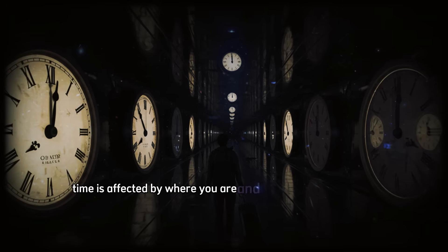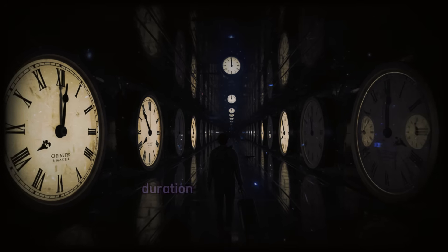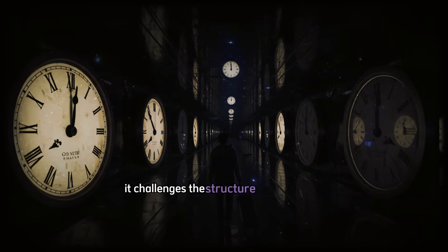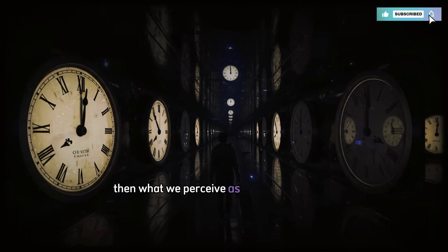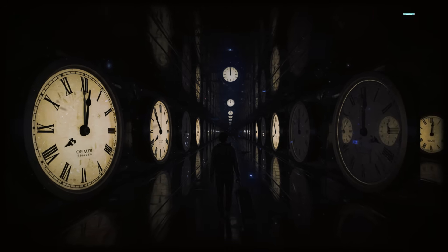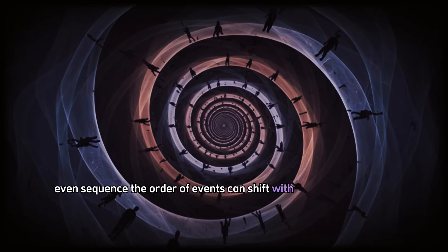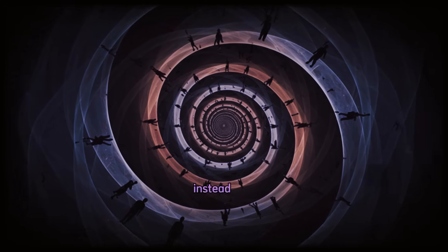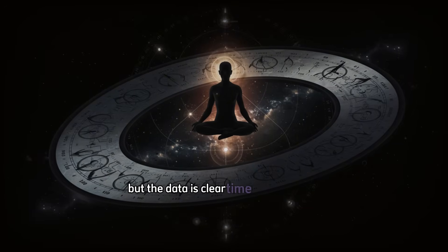Time is affected by where you are and how fast you're moving. Two events can be simultaneous in one frame and separated in another. Duration itself becomes relative. This changes more than physics equations. It challenges the structure of experience. If time can speed up or slow down depending on context, then what we perceive as now isn't universal. It depends on perspective. Even sequence, the order of events, can shift with velocity and gravity. Some physicists propose that time isn't flowing at all. Instead, past, present, and future may coexist in a larger structure where consciousness moves through a fixed geometry. That model remains debated, but the data is clear. Time isn't absolute.